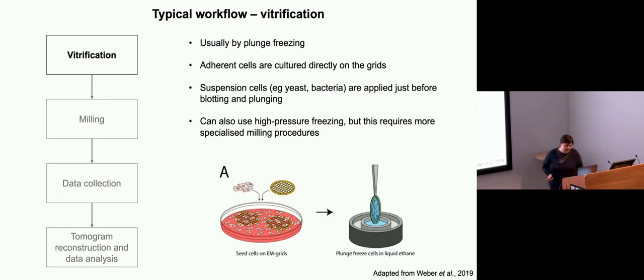The most typical way to do this is by plunge freezing. If you have adherent cells, they can be cultured directly on the EM grid. The cell density is really crucial. If they're too confluent, it makes the milling much more difficult when they're really crowded together, and means that you're less likely to get nice vitrification as well. Then if you have anything that grows in suspension, that's fairly straightforward and you just apply it and plunge as you would normally.